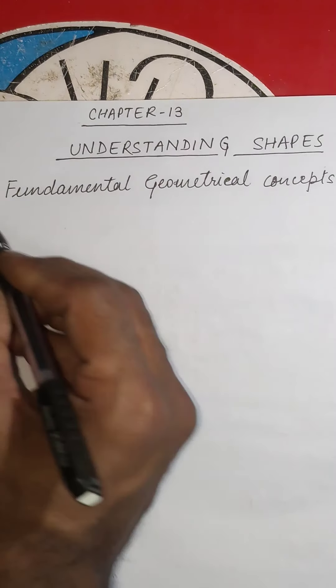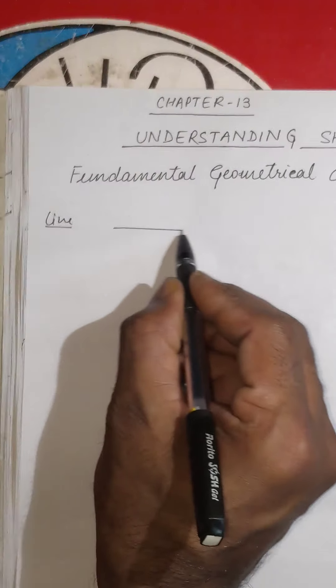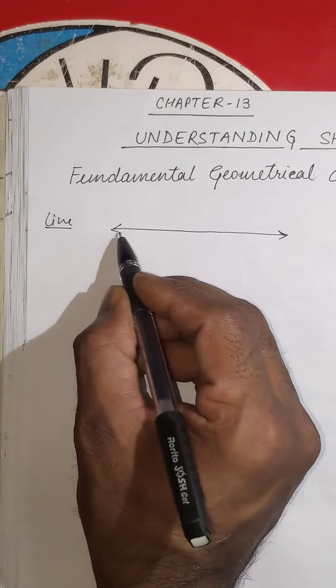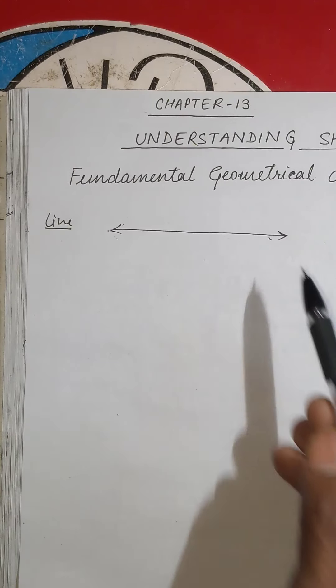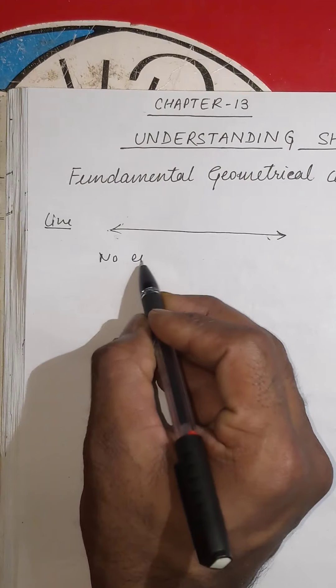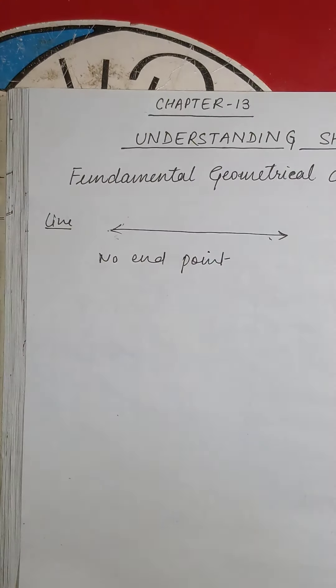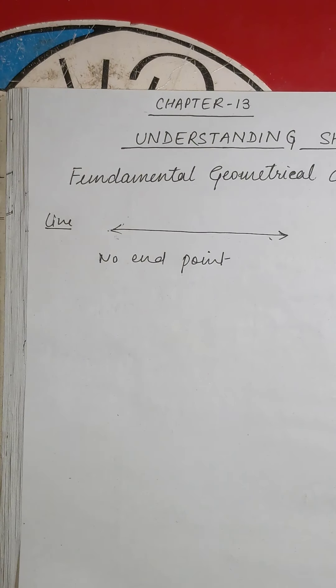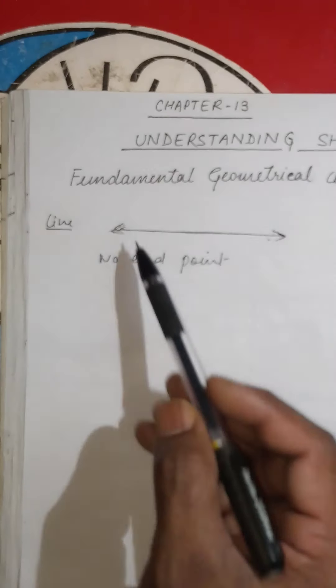The first topic is the line. A line is a straight, one-dimensional figure which has no thickness and extends infinitely in both directions. A line has no end points — it is a straight line that can extend from both ends.